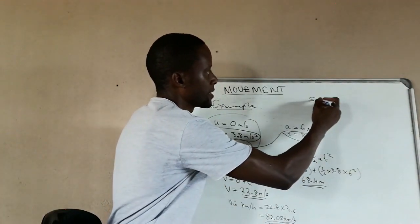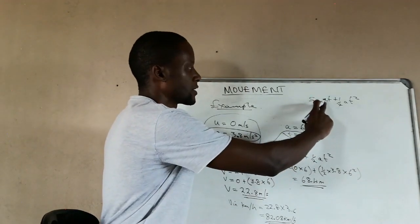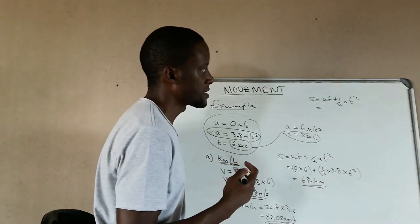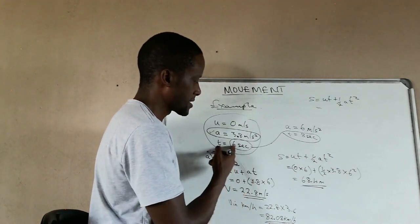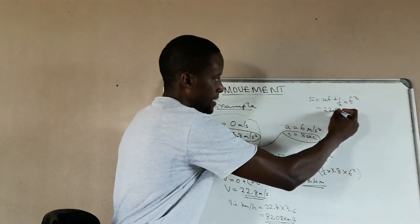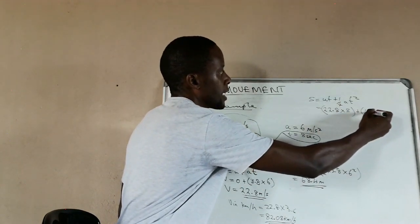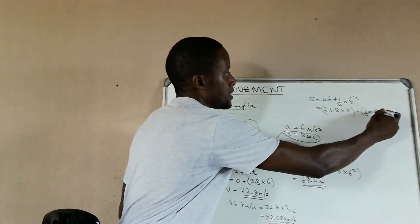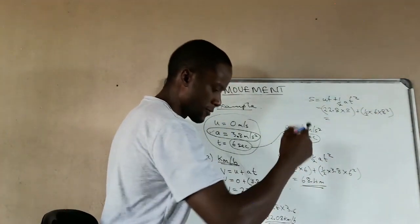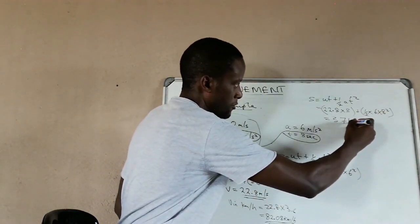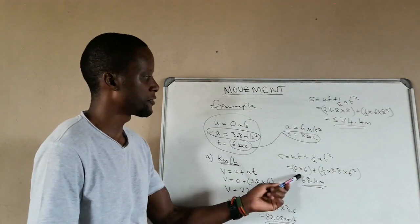For the last eight seconds, we use the same formula: s equals ut plus half at squared. In the last eight seconds the aircraft did not start from rest — it was already moving. After six seconds it had reached 22.8 meters per second, so u equals 22.8. We multiply by eight seconds, then add half times six times eight squared, which gives us a displacement of 374.4 meters.